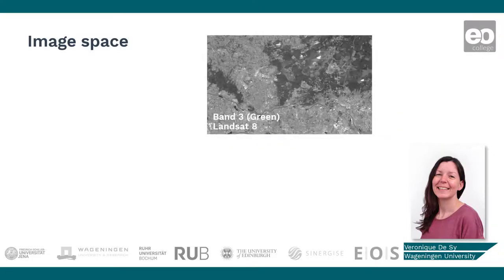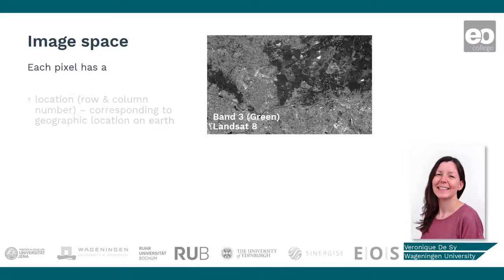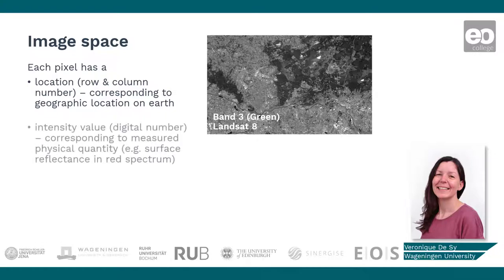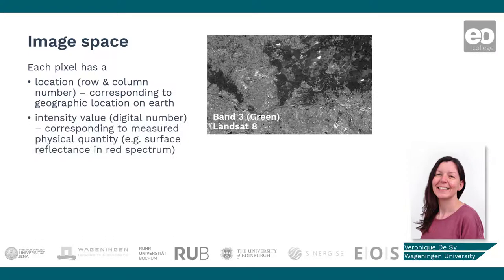First, let's talk about the image space. All pixels have a position in the image, which we call the image space. This location corresponds to a geographic location on Earth. In addition, each pixel has an intensity value corresponding to a measured physical quantity — for example, the surface reflectance in the green spectrum, as you can see on the right.